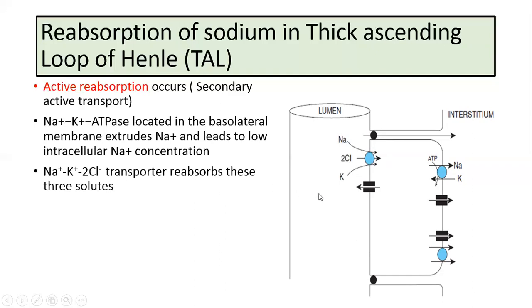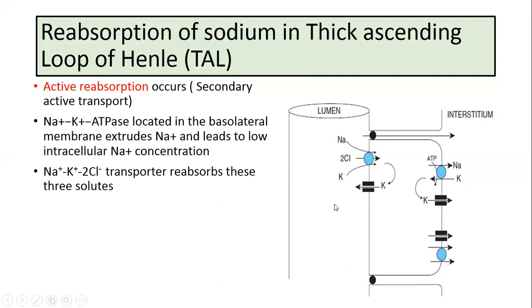sodium, potassium and 2 chloride. Now some of the potassium which has entered the cell leaks back across the apical membrane into the tubular lumen through the potassium channels. And this generates a lumen positive transepithelial potential difference of about plus 6 to plus 10 millivolts.